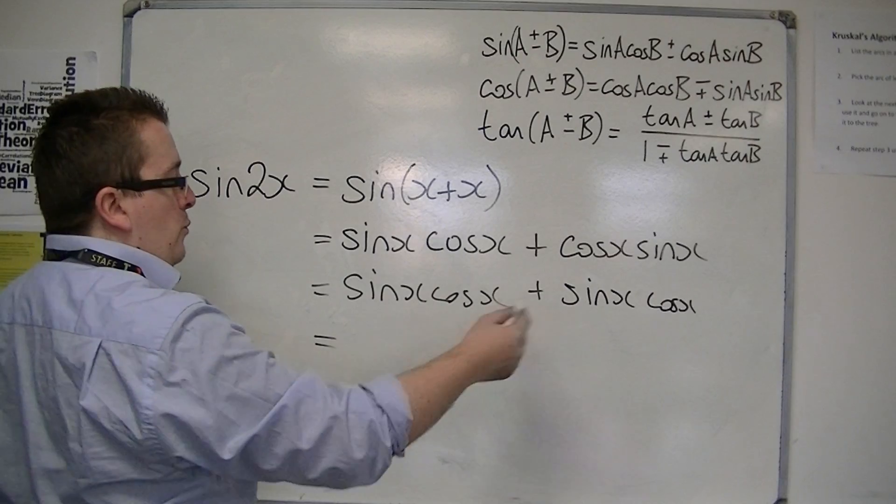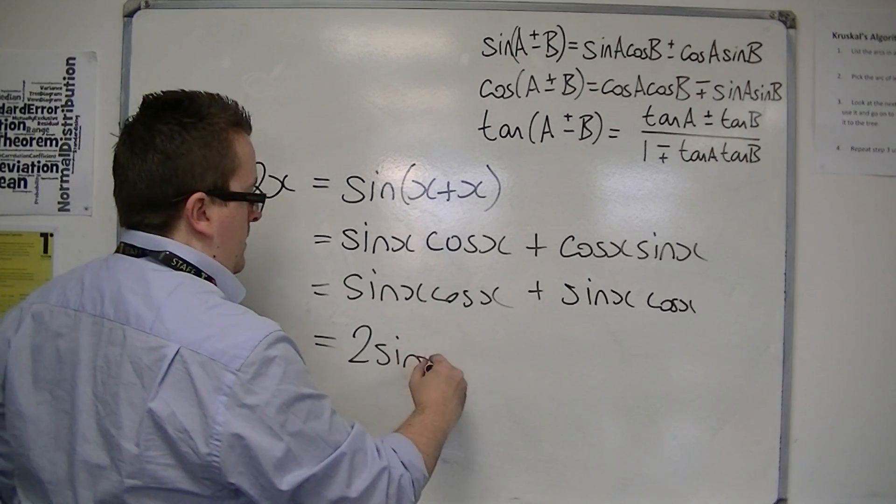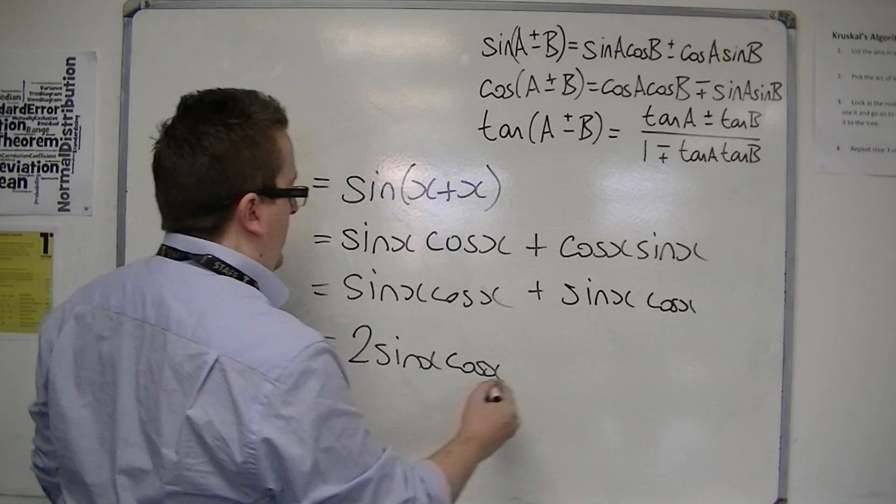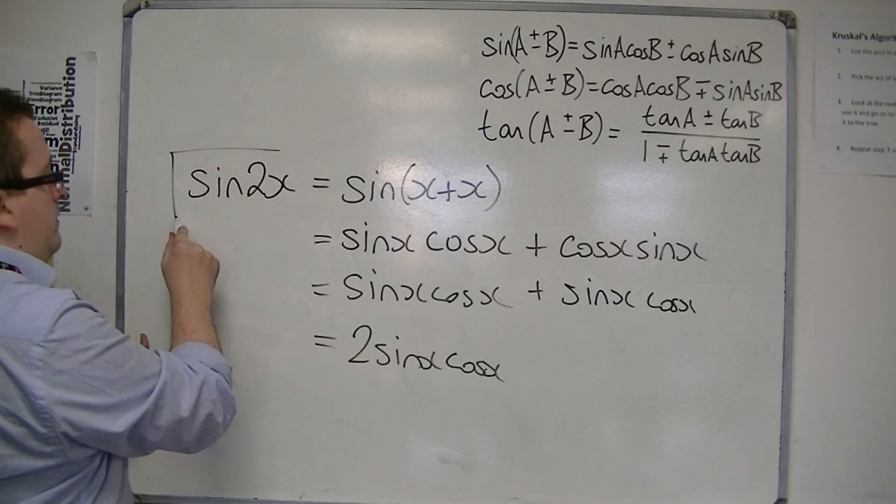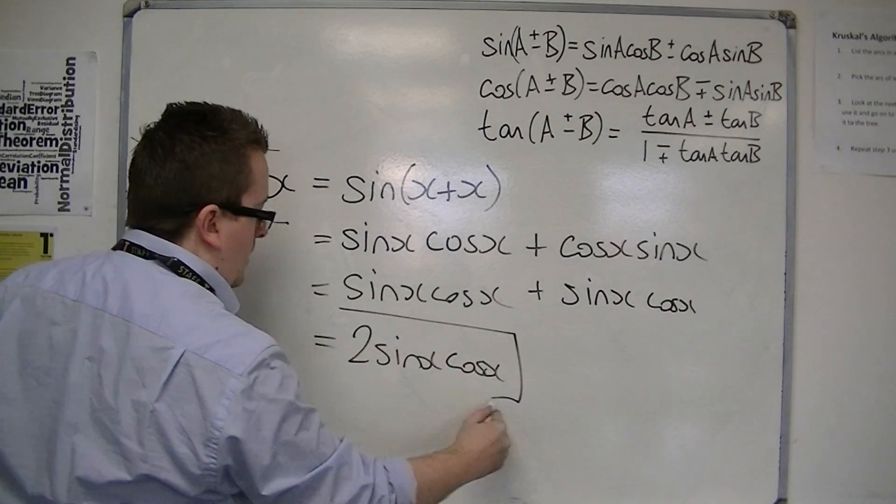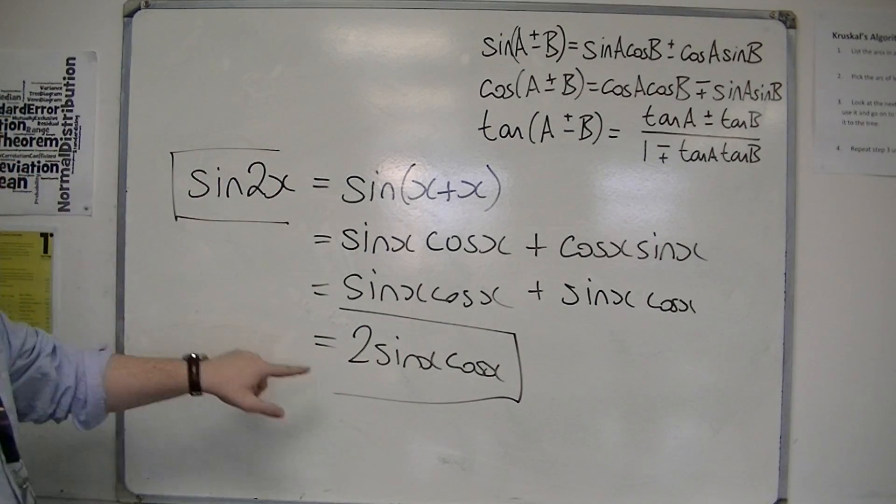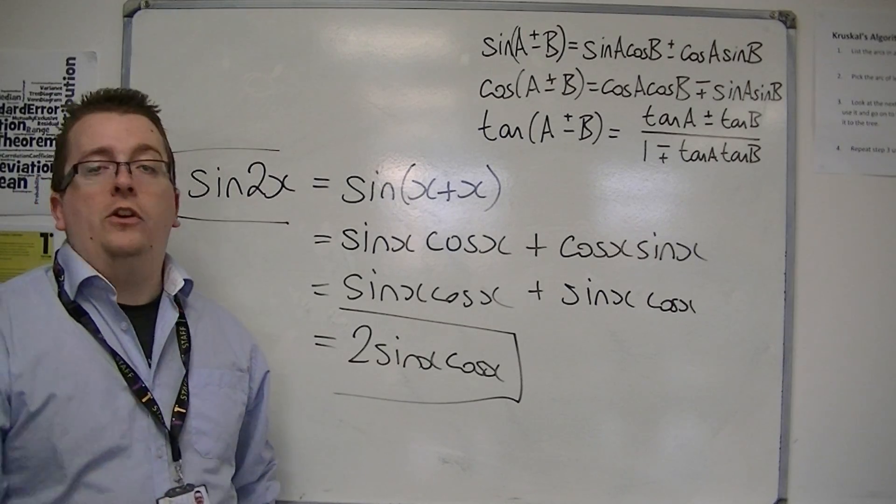So I've got two sine x cos x, and this is the identity that you need to know and make sure you remember. Sine 2x is 2 sine x cos x.